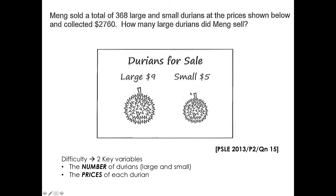The challenge in this question is that there are two key variables. The first variable is the number of durians — the total number of durians is 368 large and small. The other important variable is the prices of each durian, which is given as $9 for each large durian and $5 for each small durian.